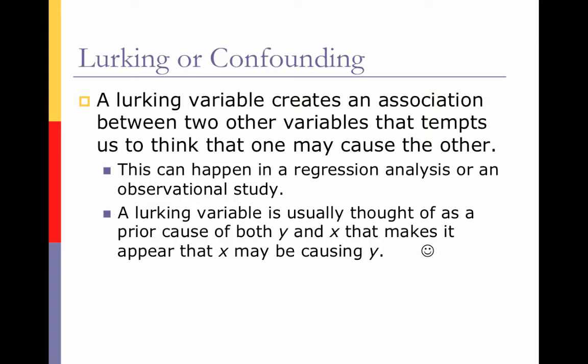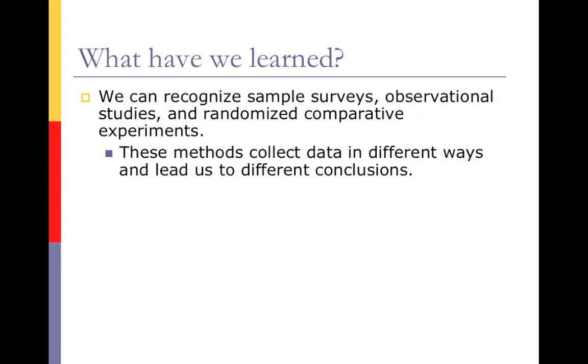So is a variable lurking or confounding? A lurking variable creates an association between two other variables that tempts us to think one may cause the other. This can happen in regression analysis or in an observational study. A lurking variable is usually thought of as a prior cause of both y and x that makes it appear that x may be causing y — it's like an underlying reason. Confounding is when the experiment is not designed properly or when one factor affects the other factor.